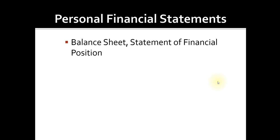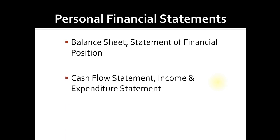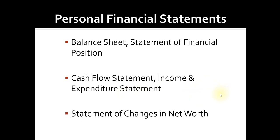To begin, let's first take a look at the different kinds of personal financial statements. A balance sheet, or a statement of financial position, is simply a sheet that has all of the client's assets and liabilities listed. We'll review in another video much more detail on a balance sheet. Another type of personal financial statement is a cash flow statement or an income and expenditure statement. We'll also review that in more detail in a later video. A statement of changes in net worth is just a time series analysis of the client's net worth through time and the changes associated.